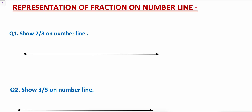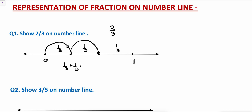Now let's see the representation of fractions on a number line. How do you represent 2 by 3 on a number line? This is a number line — suppose this is 0 and this is 1. We have to divide it into 3 equal parts: this is 1 part, 2 parts, and 3 parts. So this will be 1 by 3, again 1 by 3, and this is also 1 by 3. From 0 we are talking about 2-third, so this is 1 portion and this is 1 more portion. So 1 by 3 plus 1 by 3 equals 2 by 3 on a number line.